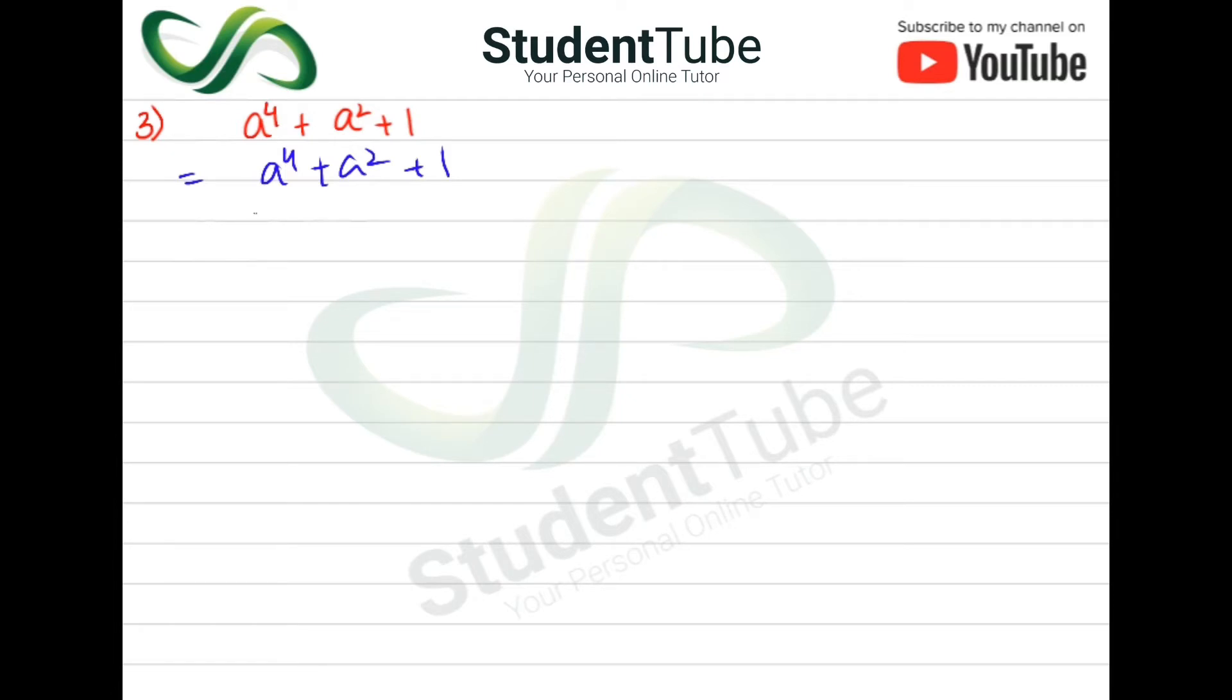So here we will add a² and subtract a². The expression becomes: a⁴ + a² + 1 + a² - a².